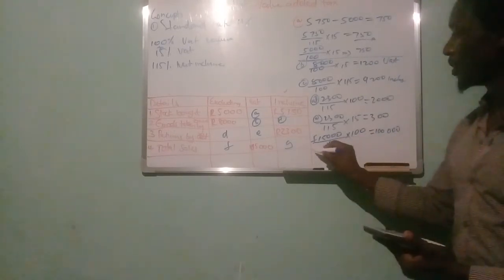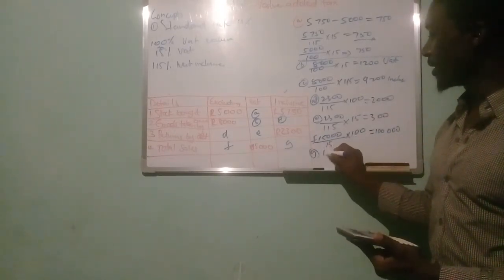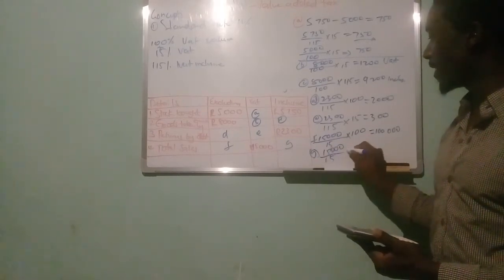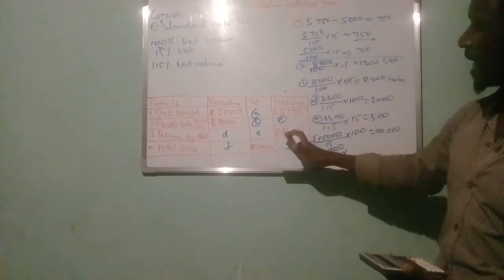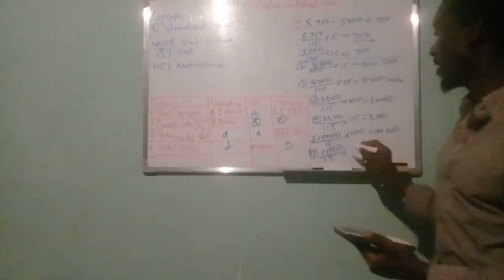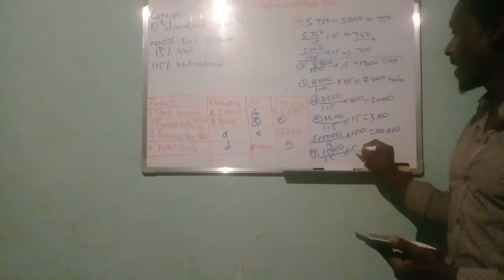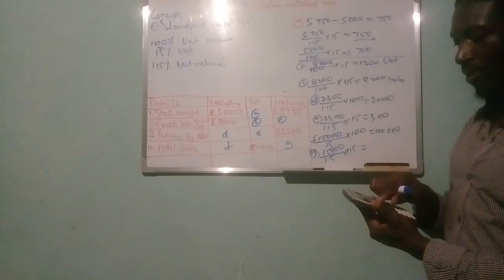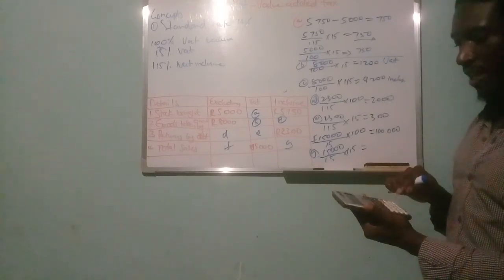For example G, the very same principle applies. You start with the VAT amount over 15. G is the VAT inclusive amount, and inclusive is over 115. So you divide by 15 and multiply by 115 to get your answer.